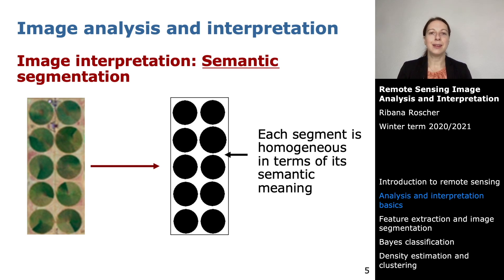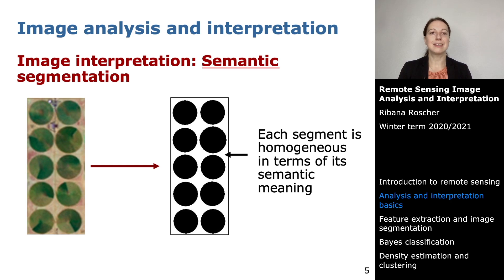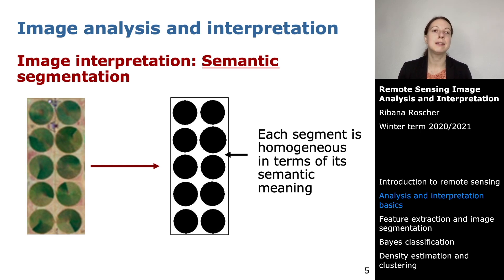Now I want to show you an image interpretation technique. One interpretation you can perform is semantic segmentation. The key word is semantic: when you do semantic segmentation you assign each pixel to a semantic meaning, resulting in segments where each segment is homogeneous in its semantic meaning — for example, crop circle or desert.